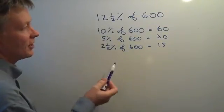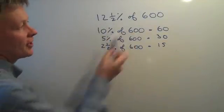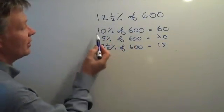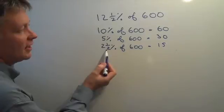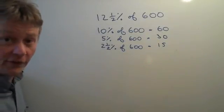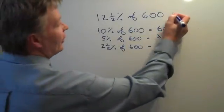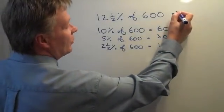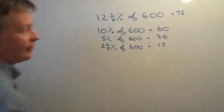So if we want to find out 12.5% of 600, all we do is add the 10% and the 2.5%, which is 60 plus 15, which is 75. So 12.5% of 600 would be 75.